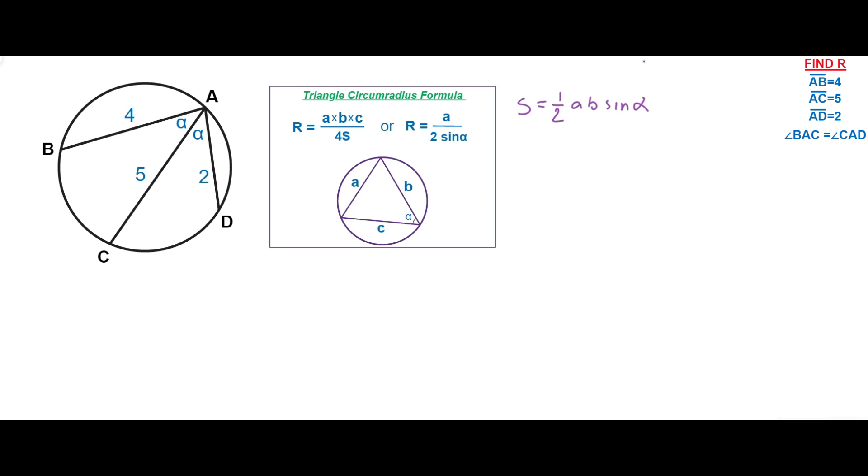We know that one of the triangle area formulas is AB sine alpha divided by 2. If we put this formula here, we can get the second formula, which is much simpler and we're going to use this formula later in this video.